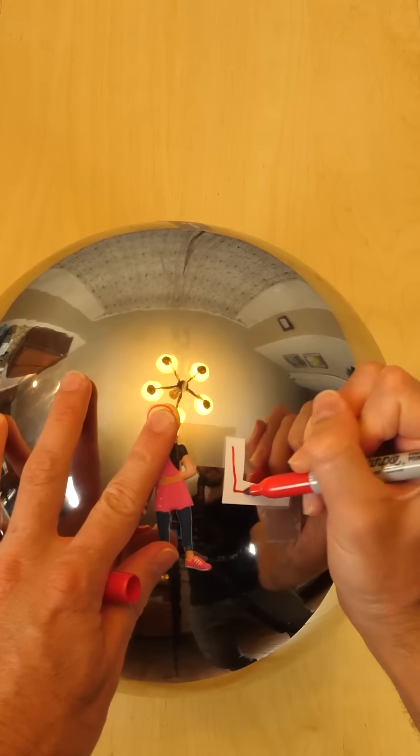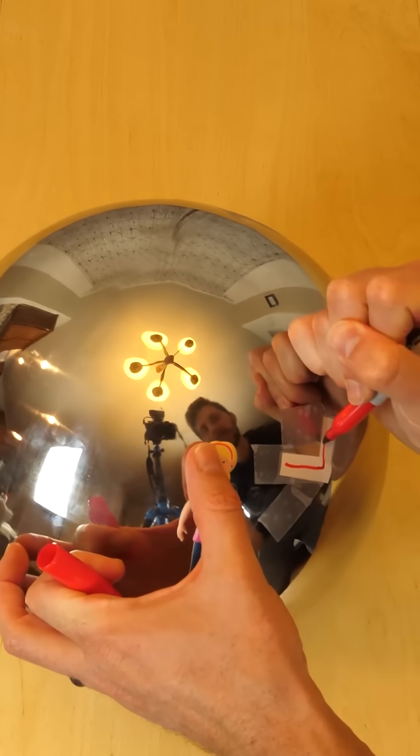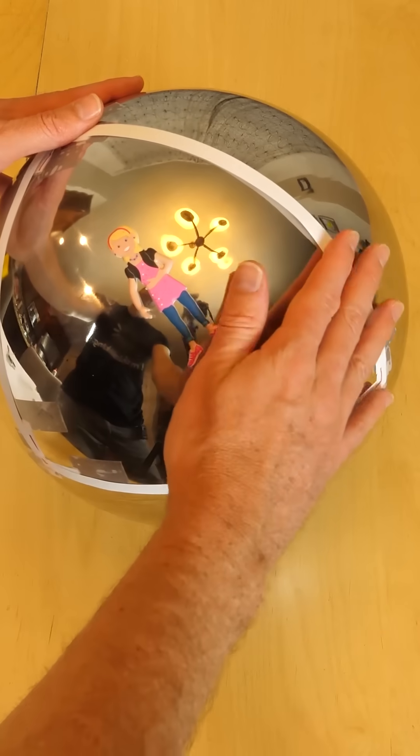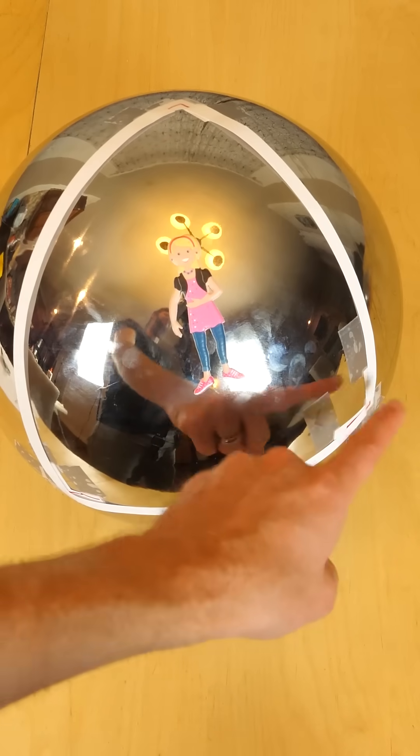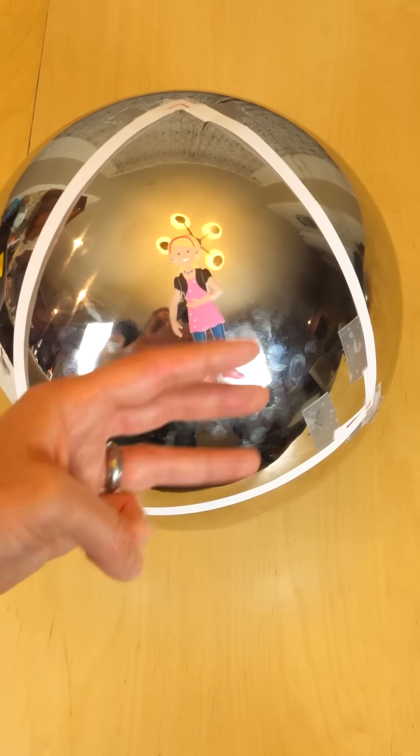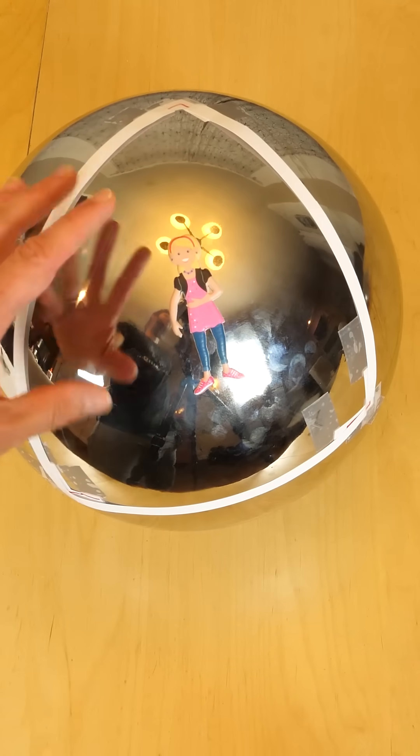So she draws three right angles really far away from each other in her universe and connects them with straight lines. And lo and behold, she can connect three straight lines with three 90-degree angles and it makes a triangle. So she determines that her three-dimensional shape is actually spherical.